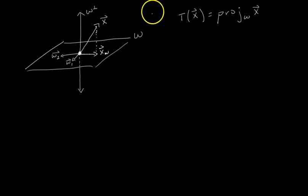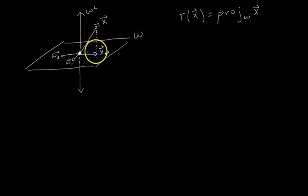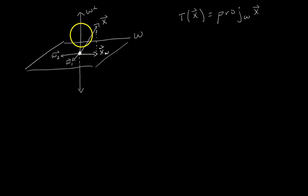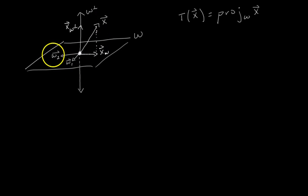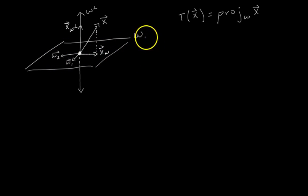Another thing we're going to look at in this derivation is the projection of X onto W perp — in other words, the vector X minus the vector X sub W, which is this vertical vector here in W perp. This is X sub W perp. Down here I've drawn two basis vectors for W: W1 and W2. That's going to come up in our derivation as well.